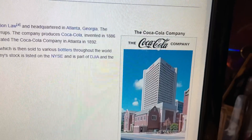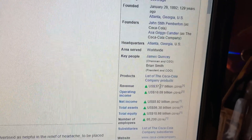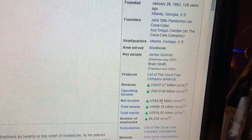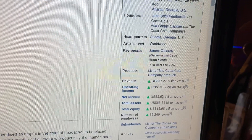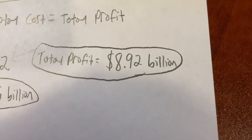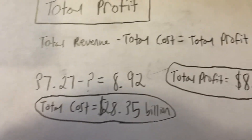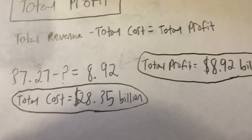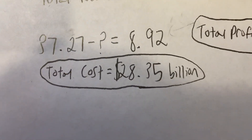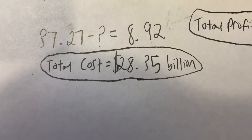As you can see here, the Coca-Cola Company in 2019 had revenue of $37.27 billion dollars, and their total profit — or in this case their net income — was about $8.92 billion dollars. So in order for Coca-Cola to make $8.92 billion in total profit, using the equation total revenue minus total cost equals total profit, we can calculate that their total cost should be somewhere around $28.35 billion dollars.